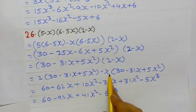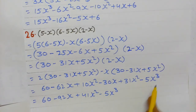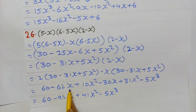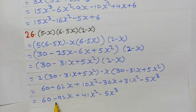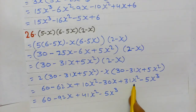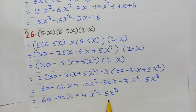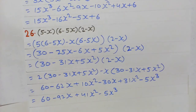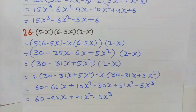Then multiplied by the 2nd bracket using distributive property: 2×(30 - 31x + 5x²) and -x×(30 - 31x + 5x²). Results: 60; -62x - 30x = -92x; 10x² + 31x² = 41x²; -5x³. Final answer: -5x³ + 41x² - 92x + 60.